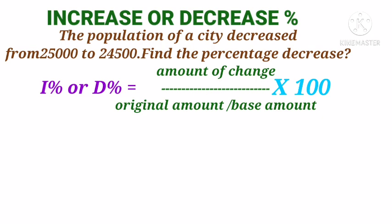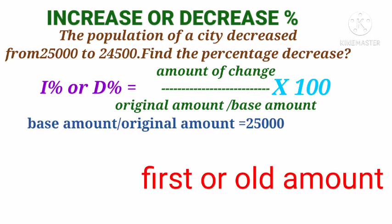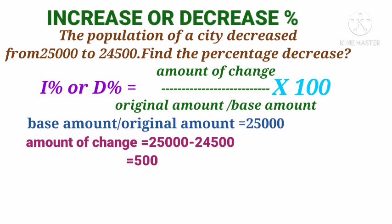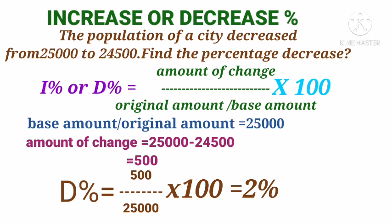Here the base amount or original amount or first amount is 25,000. Then the amount of change becomes base amount minus new amount: 25,000 minus 24,500 equals 500. Then decrease percentage equals 500 divided by 25,000 into 100, which becomes 2 percentage.